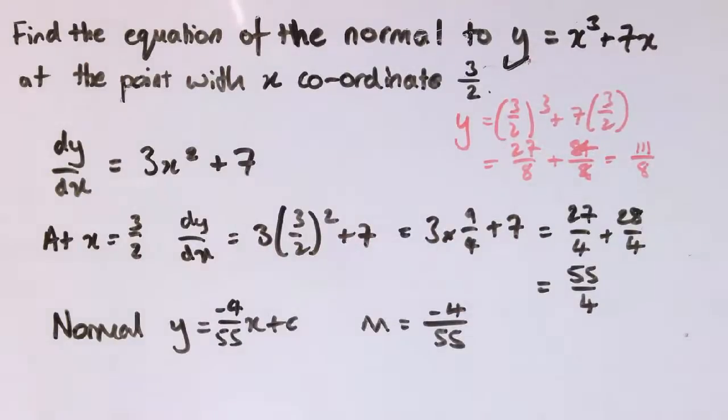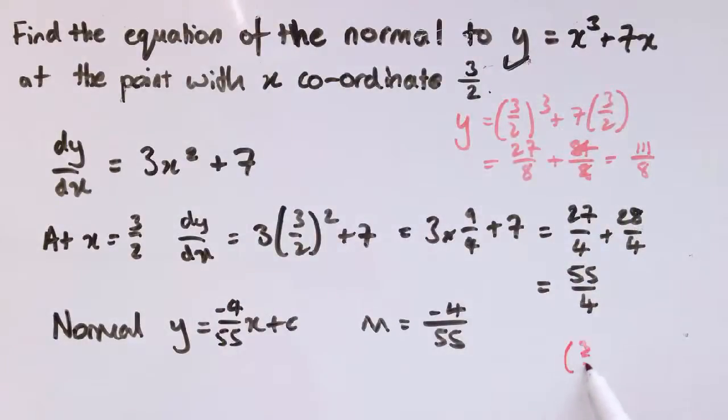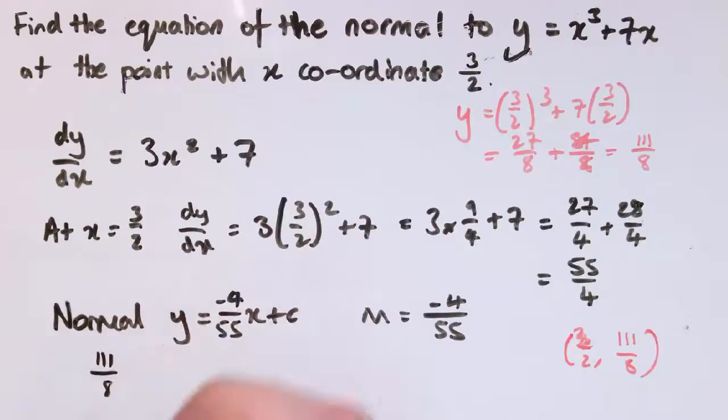I've made life difficult for myself by choosing some awkward fractions here. But it's good to know that the process works in exactly the same way. So I've now got this point where the normal intersects the curve, which has coordinates x equals 3 over 2 and y is 111 over 8. So these coordinates must satisfy the formula for the normal. So I have y is 111 over 8, that's equal to minus 4 over 55 times 3 over 2 plus c.